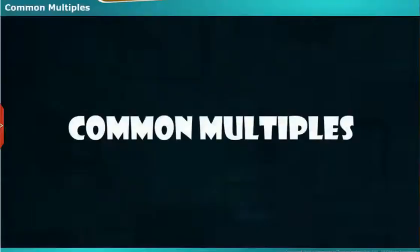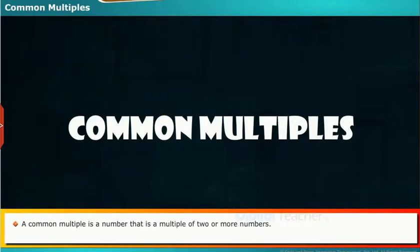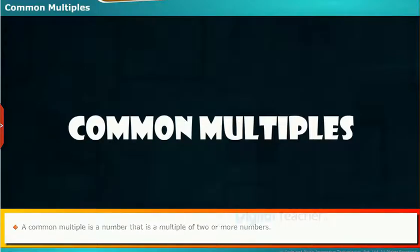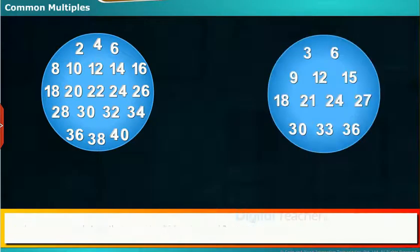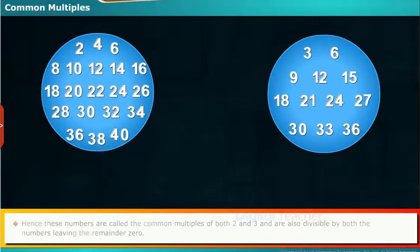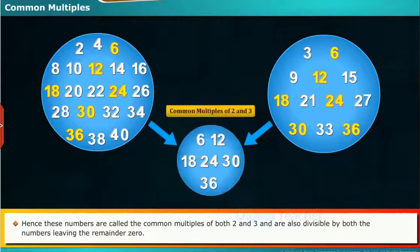Here we see what are called common multiples. A common multiple is a number that is a multiple of 2 or more numbers. Let us have the multiples of 2 on one side and the multiples of 3 on the other side. Now we can see the common multiples of 2 and 3. These numbers are called the common multiples of both 2 and 3 and are also divisible by both numbers, leaving the remainder 0.